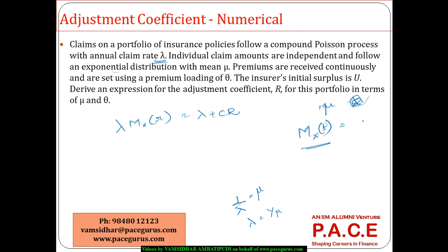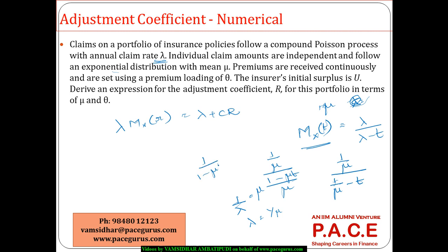The moment generating function for an exponential distribution is lambda divided by (lambda minus t). Since lambda equals 1/mu here, the MGF becomes (1/mu) divided by (1/mu minus t), which simplifies to 1 divided by (1 minus mu*t). That is the moment generating function of X.